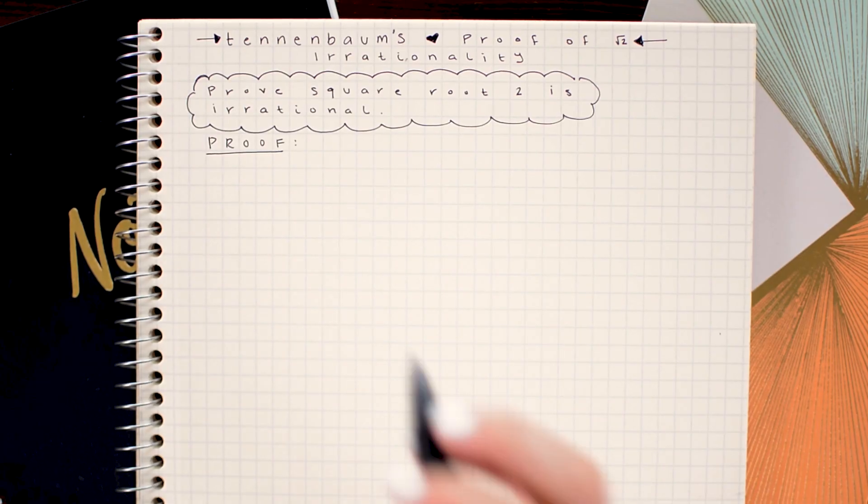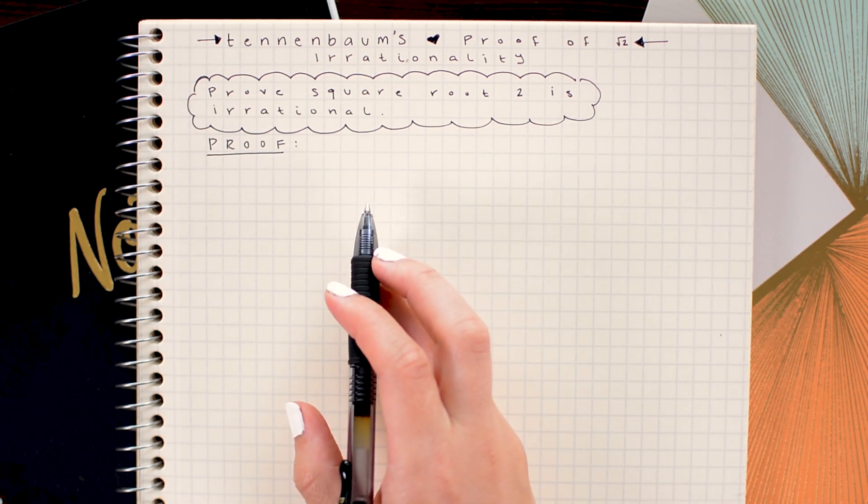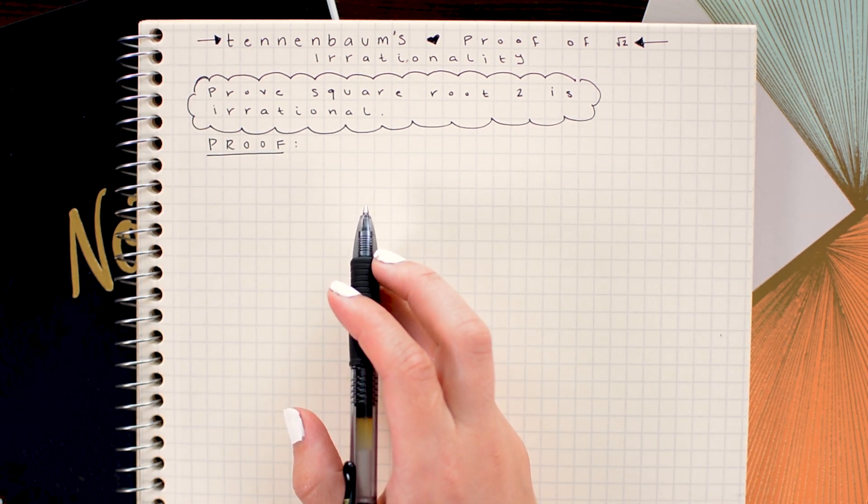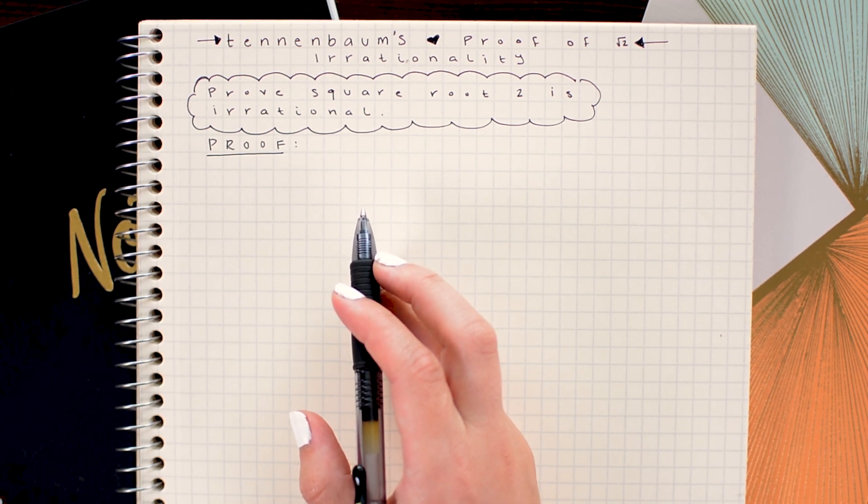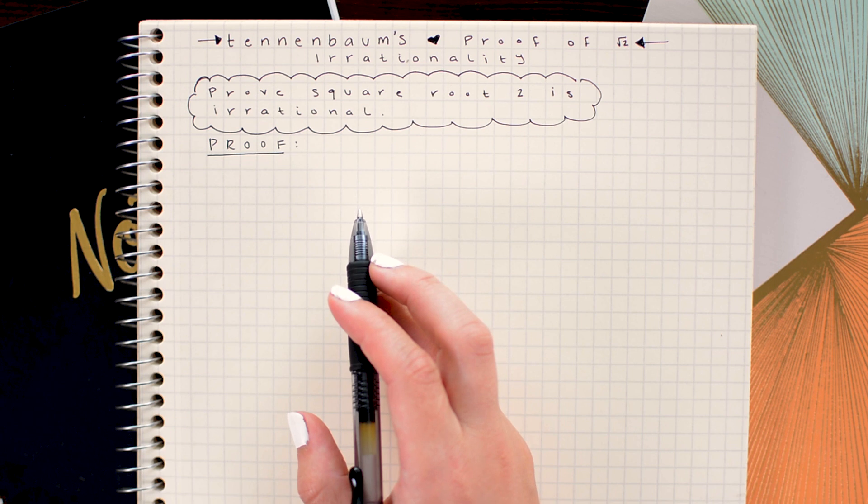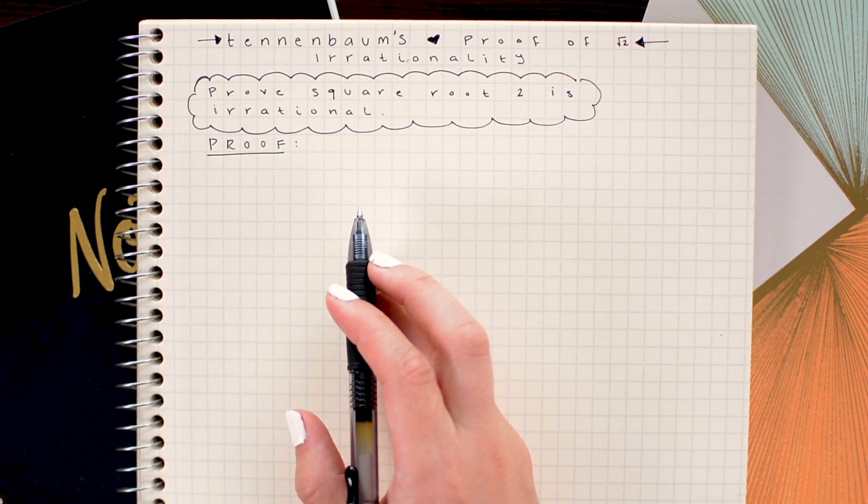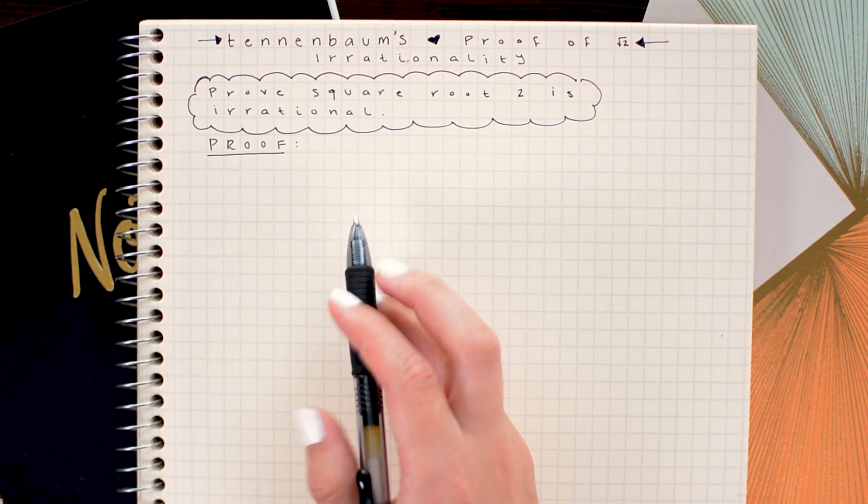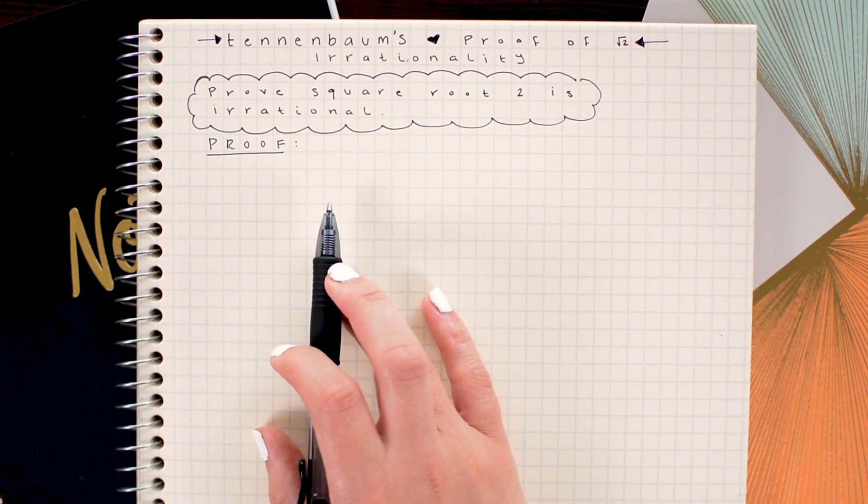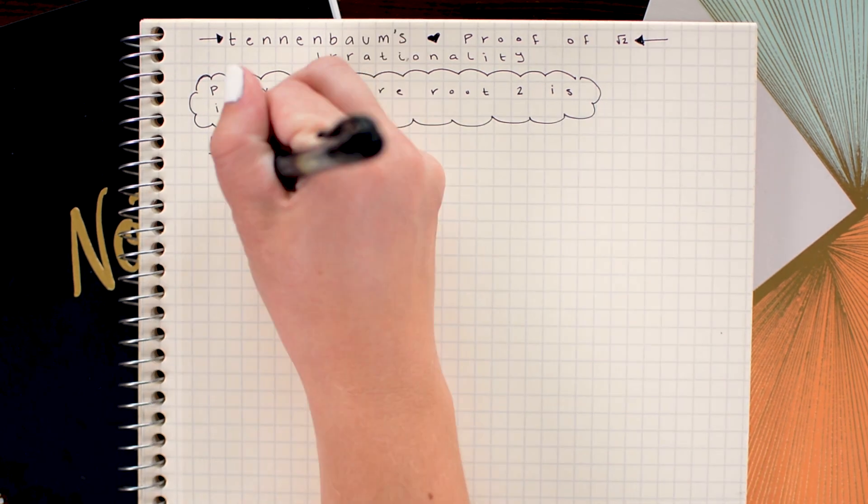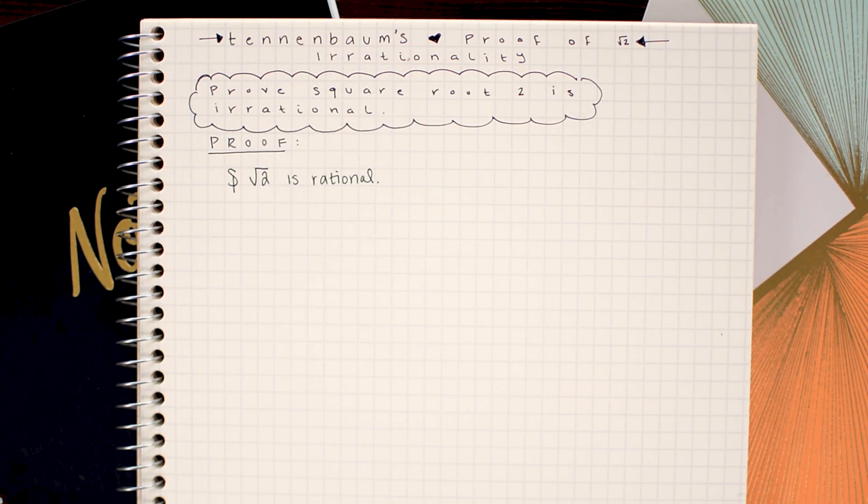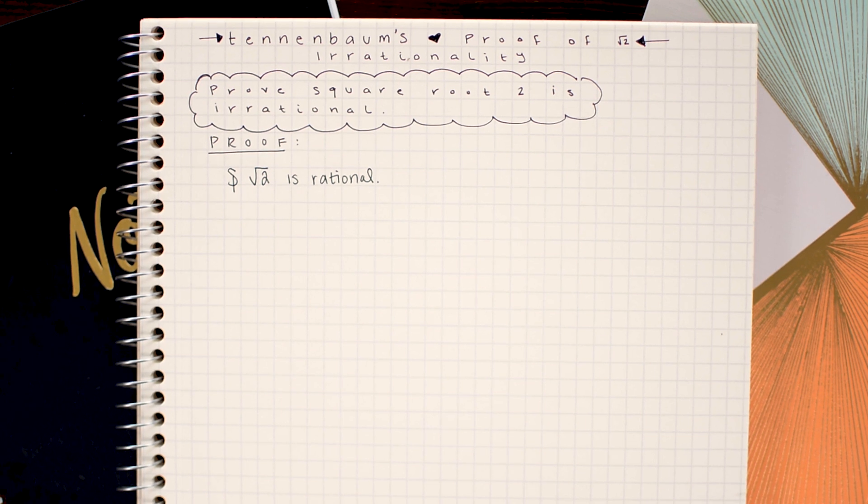The square root 2 irrationality proof I'm showing you today is accredited to Stanley Tenenbaum, an American mathematician from the 1950s and the proof begins a lot like our classic proof I showed you before. We're still going to have a proof by contradiction and we are still going to begin by stating that the square root of 2 is rational. This implies that we could set the square root of 2 equal to a ratio of two integers so that is the second step.